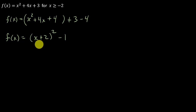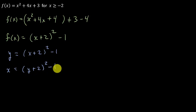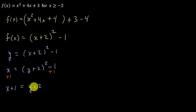Now I'm going to find the inverse. We change f of x to y, so y equals x plus 2 squared minus 1. Then we swap the x's and the y's: x equals y plus 2 squared minus 1. Then add 1 to both sides, giving x plus 1 equals y plus 2 squared. Now we need to take the square root of both sides.